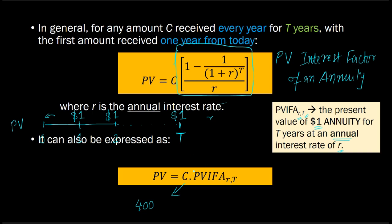So the usefulness of this expression is that if I know how much a $1 annuity is worth today, all I need to do is take that and multiply it by C, where C is the actual annuity, which in this case is $400.